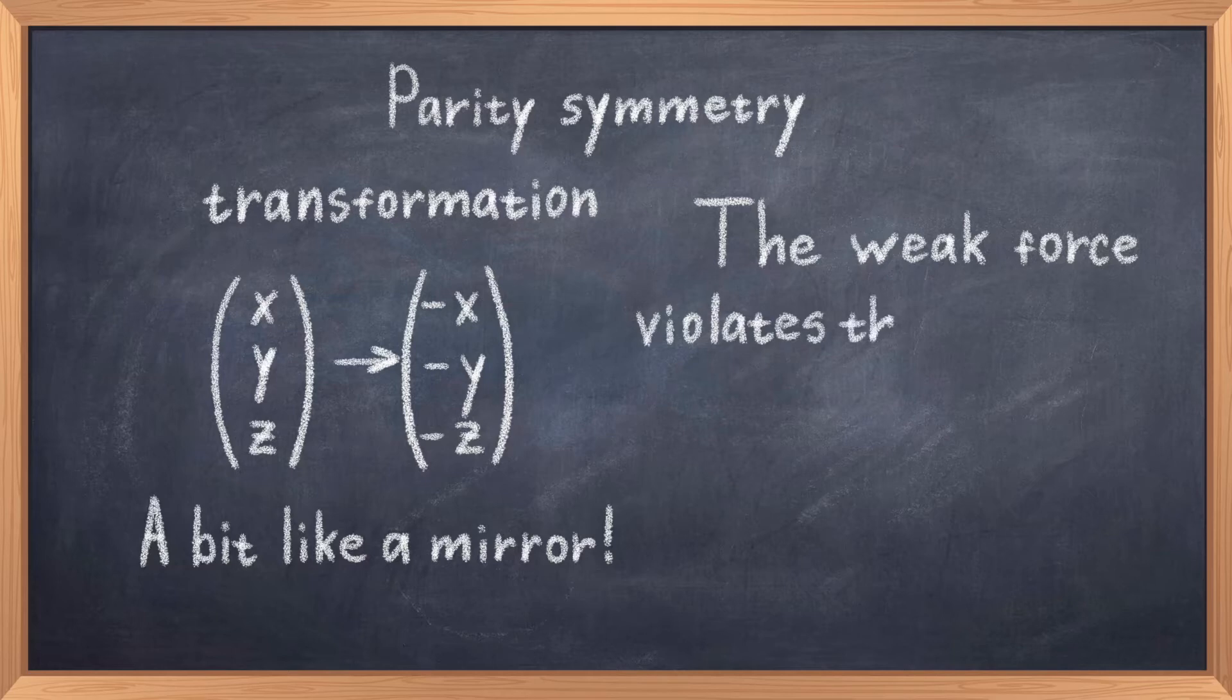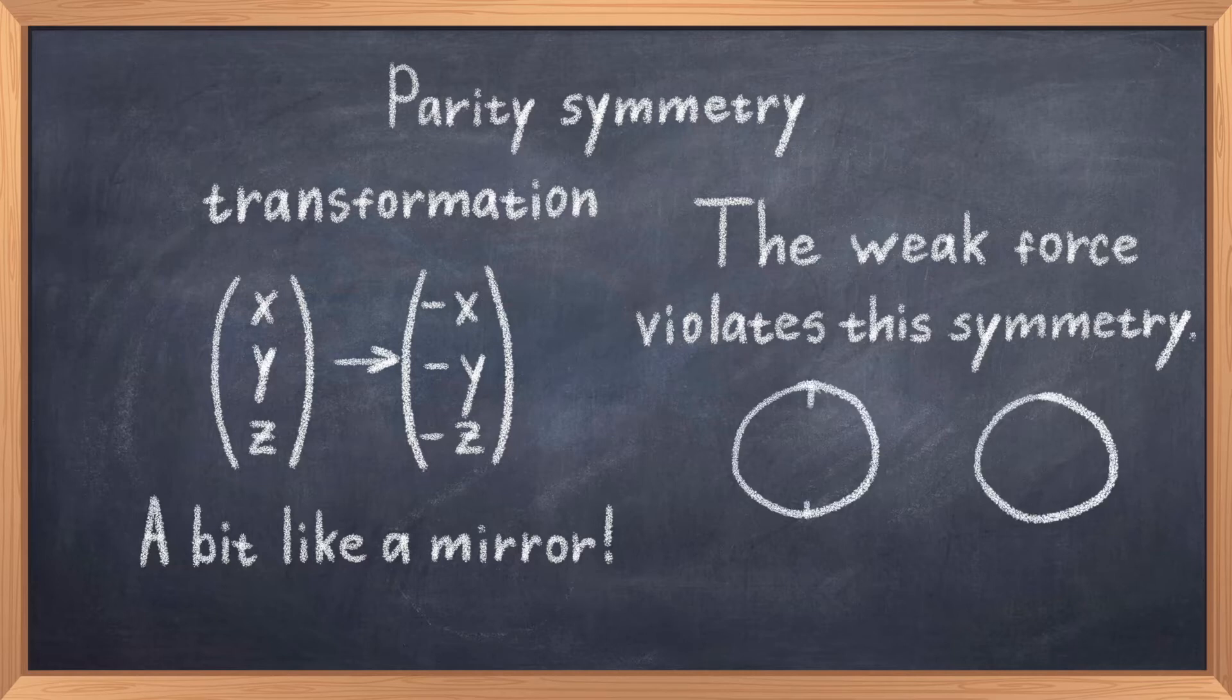The point of this aforementioned experiment in the 50s was to test the parity of the weak force, and the results showed that the weak force broke both charge and parity symmetry. The experiment was done by looking at a beta minus decay, and they discovered that the involved electron preferred one direction over another.